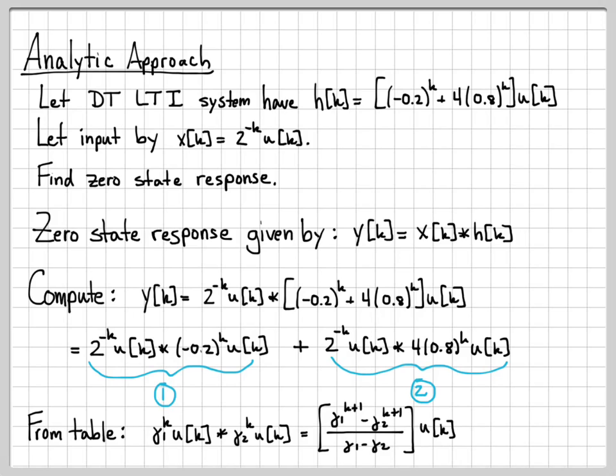So if you look at term 1, you'll see that's exactly what we have. We have a γ to the k. The γ here is 2^(-1), convolved with another term that's in the form of γ to the k. Here that term is γ = -0.2. So we can use this result for term 1, and we can also use this result for term 2.